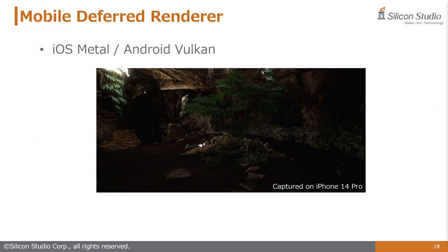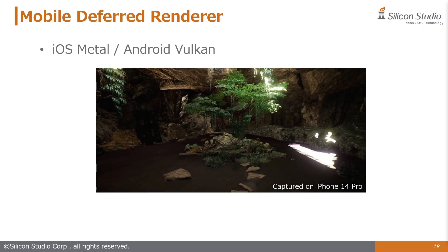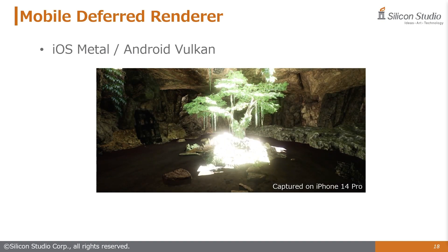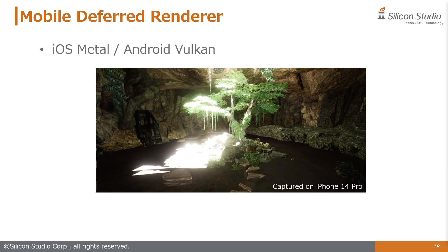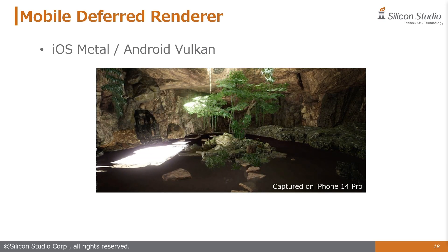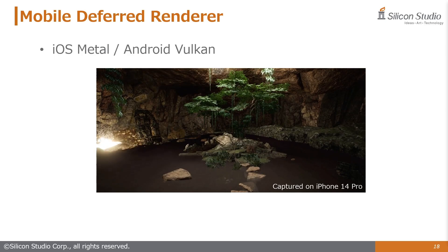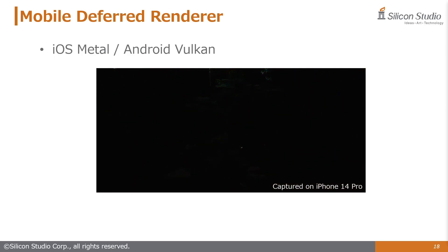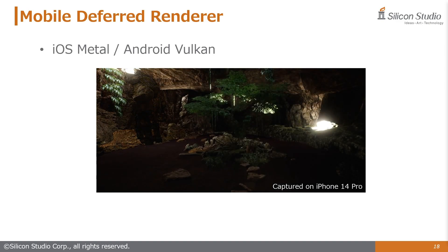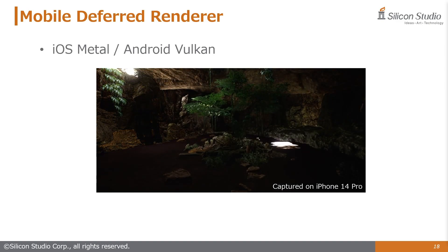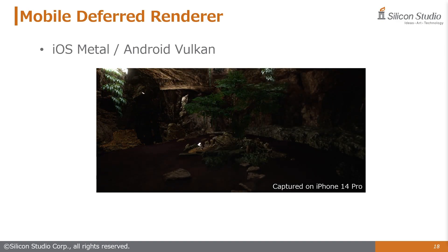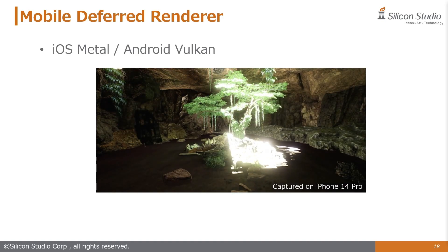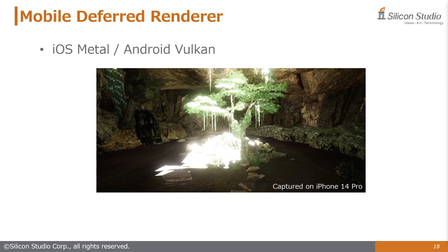In the implementation for Unreal, Enlighten has become usable in the mobile deferred renderer. Leveraging the low runtime cost of Enlighten, high-performance real-time global illumination is now achievable on mobile. The video being played is a capture of actual execution on the iPhone 14 Pro running smoothly at 60 frames per second. We have confirmed that it runs smoothly on mid-end phones such as the iPhone 12 and Google Pixel as well.